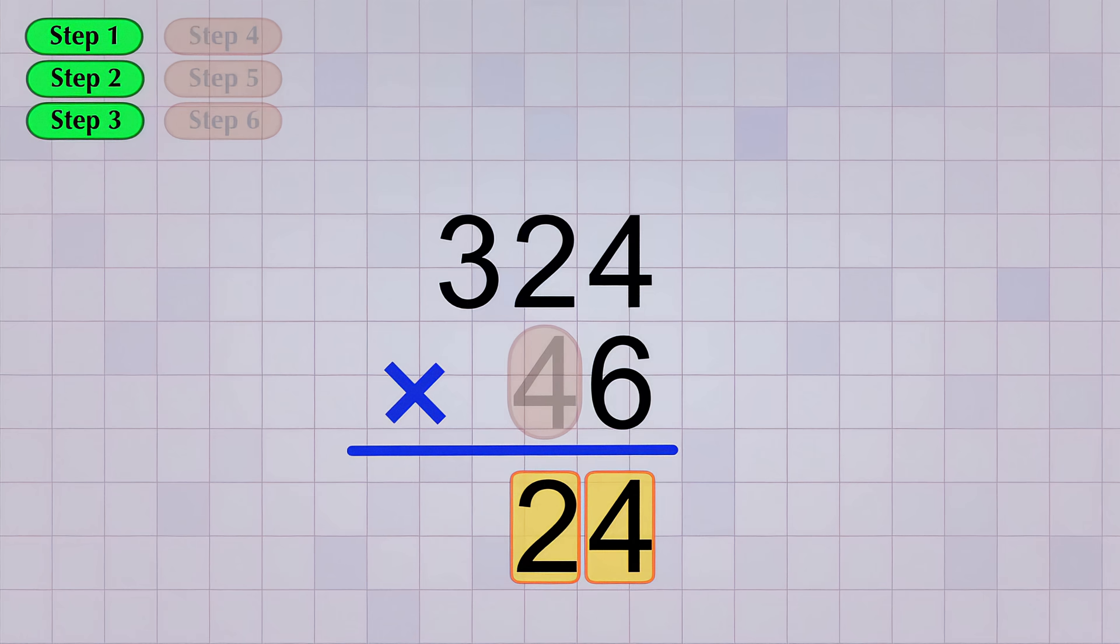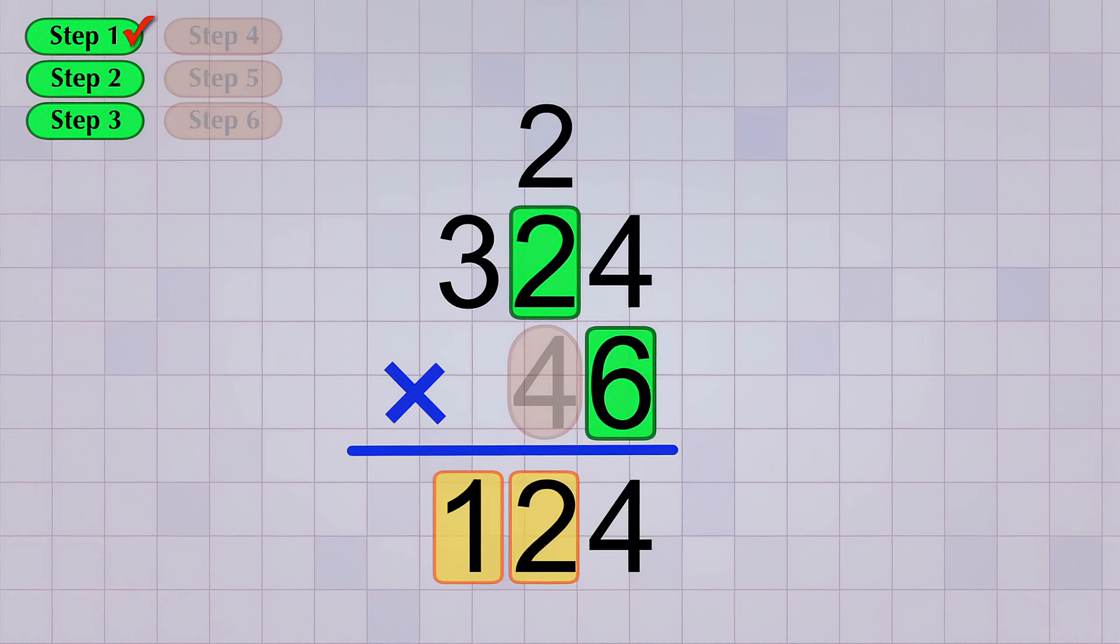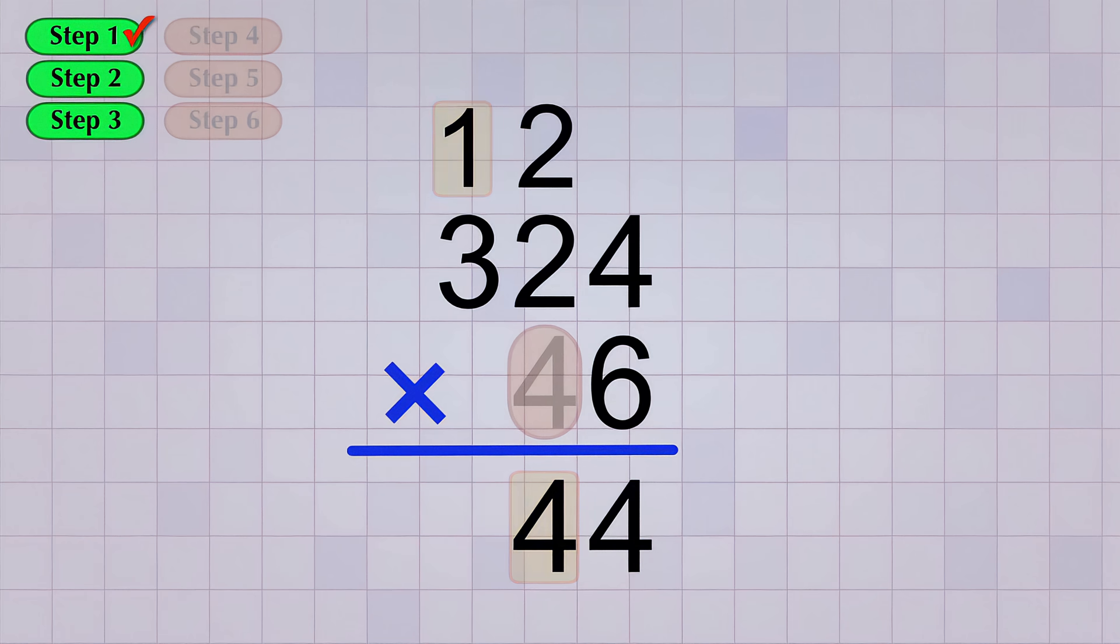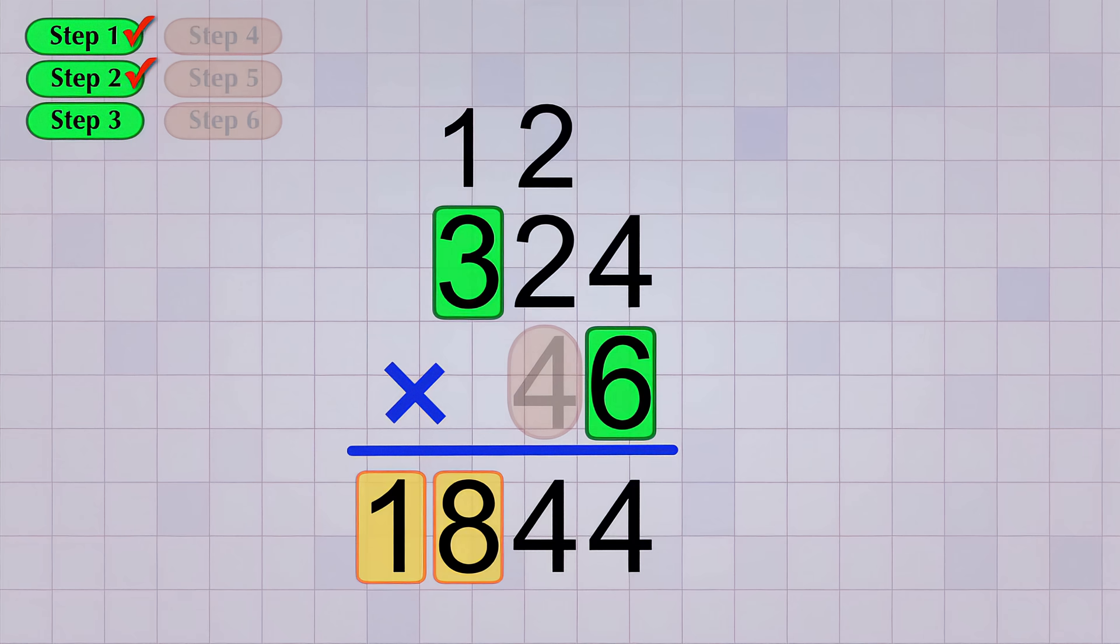And since 24 has two digits, we can leave the 4 in our answer line, but we need to carry the 2 and put it above the next top digit that we're going to multiply. So the next step is 6 times 2, which is 12. But we have to add in the 2 that we carried, so 12 plus 2 gives us 14. That's another two-digit answer, so we leave the 4 in our answer line and carry the 1 up above the next digit that we're going to multiply. And our third step is 6 times 3, which is 18, and then we add in the 1 that we carried and we get 19. This time we can leave both digits of the 19 in our answer line, because there's no more multiplication steps to do.